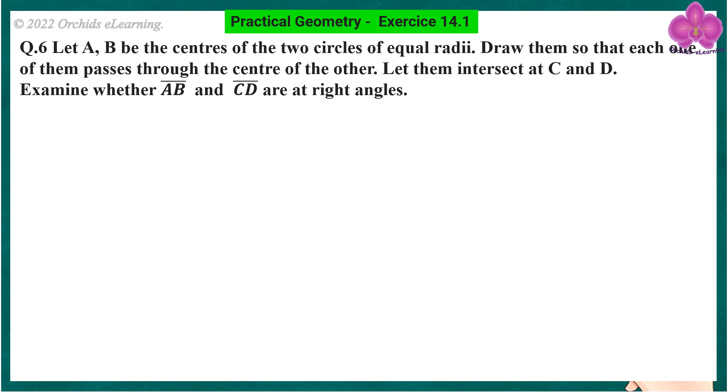Let A, B be the centers of the two circles of equal radii. Draw them so that each one of them passes through the center of the other. Let them intersect at C and D.